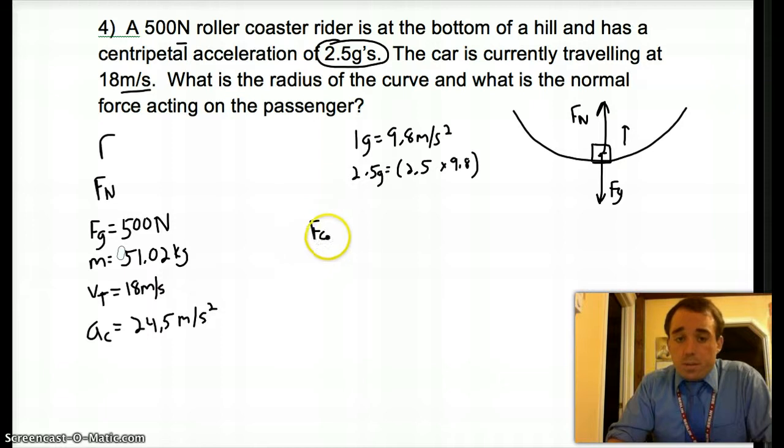So centripetal force, it's going to be a positive number, is going to equal our normal force. Oh no, it's our force of gravity minus our normal force. All the forces acting away minus all the forces acting towards. So we have not enough information for that. We know the FG obviously, but we don't know the normal force and we don't yet know centripetal force.